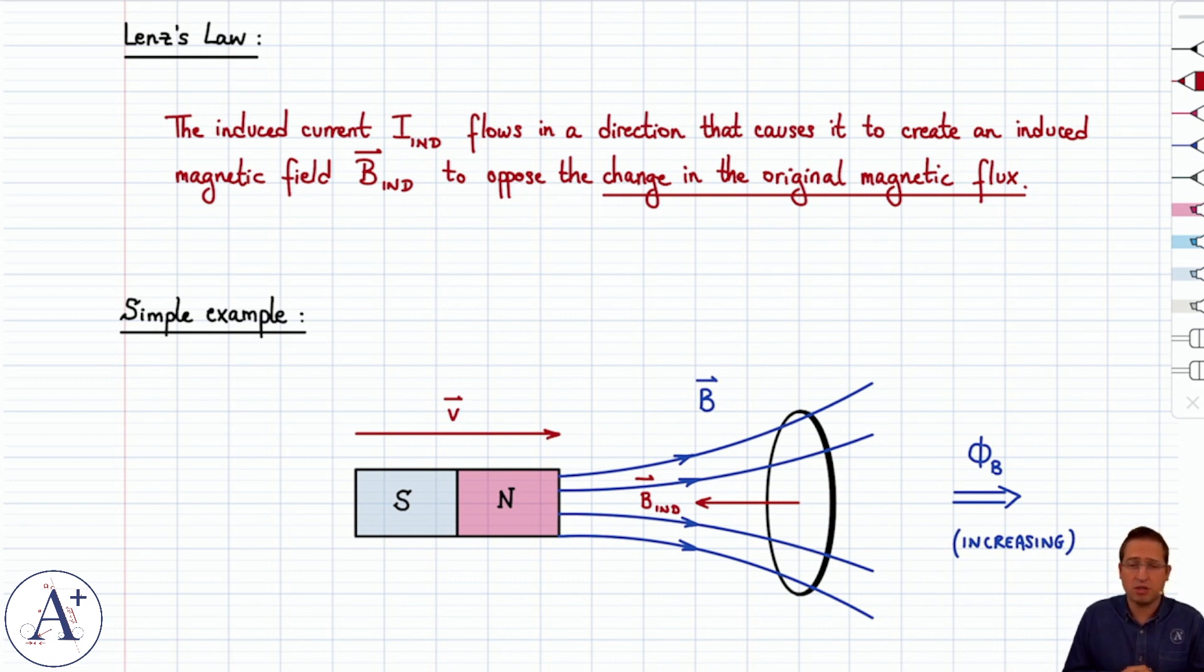The only way that you get B_induced pointing to the left is if your induced current, I_induced, by the right-hand rule, goes around the conducting ring like this. So fair enough, that's Lenz's law.